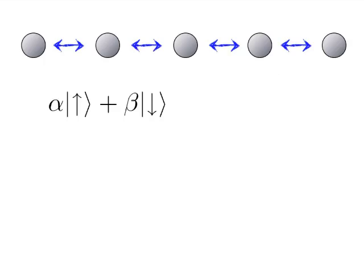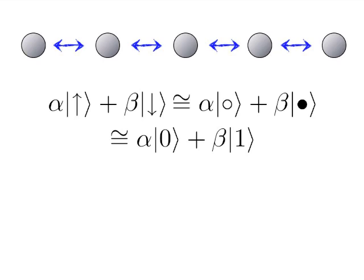Systems of many qubits are extensively used in physics. The two states can be spin-up and spin-down, the presence or absence of a particle, or abstractly 0 and 1.